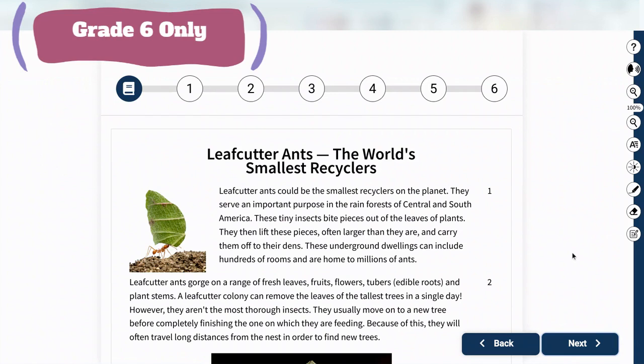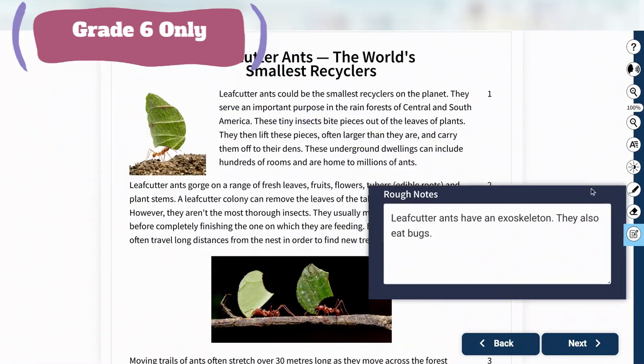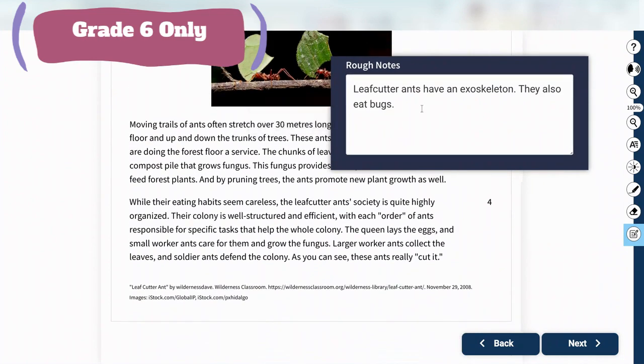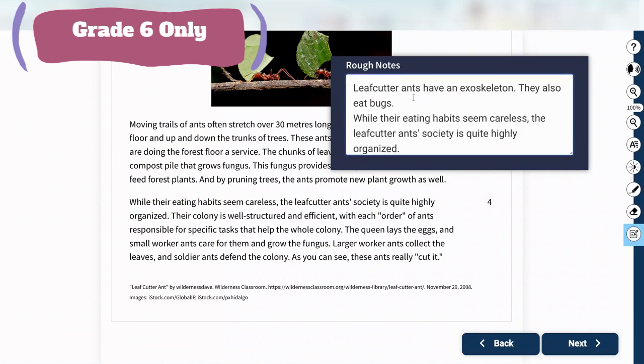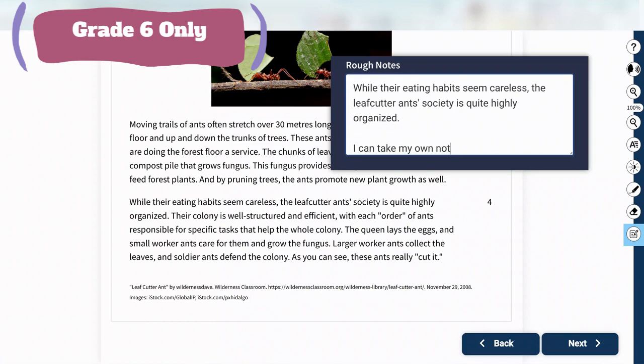And I wanted to show the grade sixes one last accessibility tool that the grade threes don't have. Right here under the eraser, you can see there's a button that says rough notes. I'm going to click on rough notes and here is where I can actually write all of the notes that I might be thinking about for the story. So I'm going to say leaf cutter ants have an exoskeleton. They also eat bugs. And maybe as I'm reading, I can move this around if I need to. As I'm reading, I might continue to add some more. Maybe I want to copy control C and paste something on here too. So I have the ability to do this and I can take my own notes.